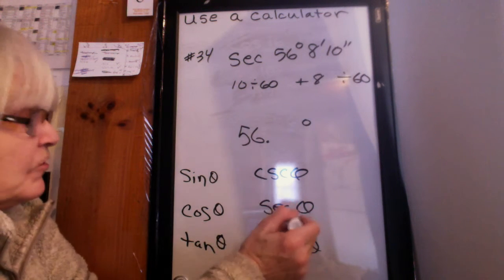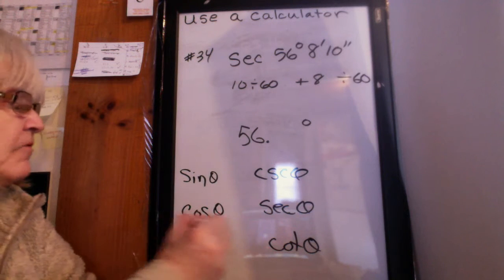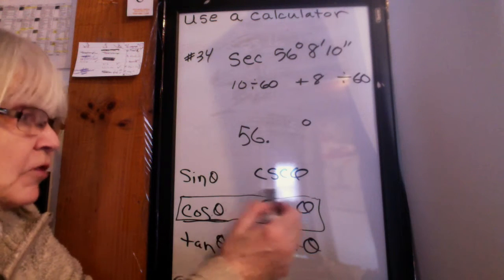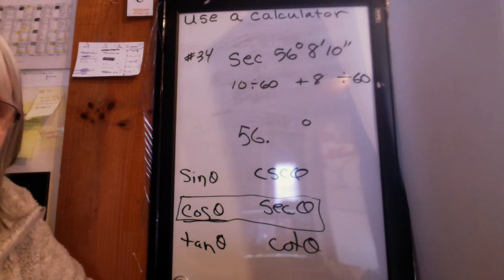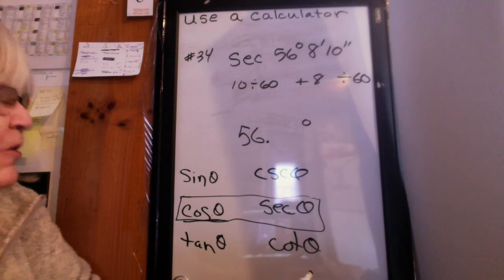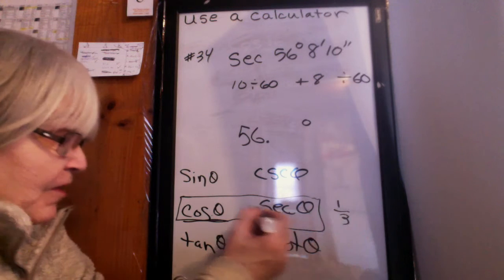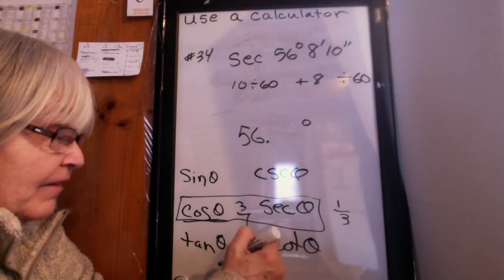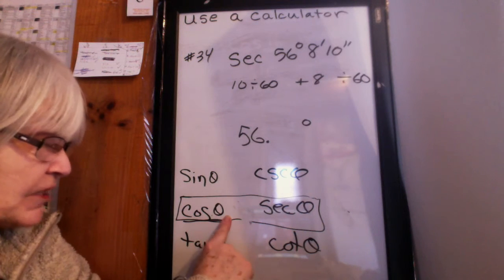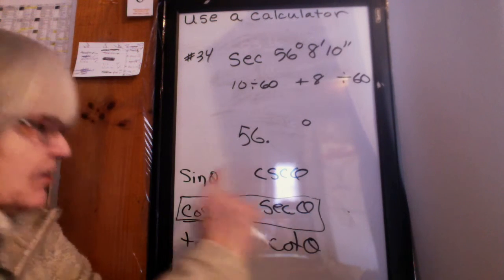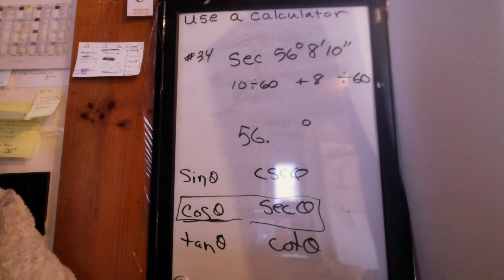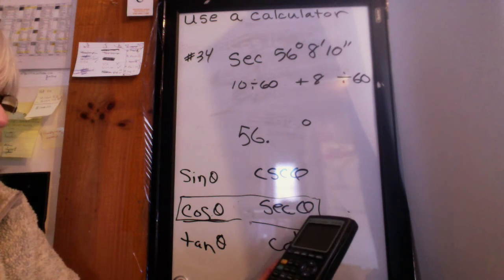So I can't use the secant button. I have to use the cosine button. So you have to know something about the relationship between cosine and secant. Do you remember what that relationship is? The reciprocals of each other. Right. So if this was one third, this would be three over one. Right. So I can do the cosine. If I want the secant, I do the cosine of that angle, and then I do the reciprocal of it.